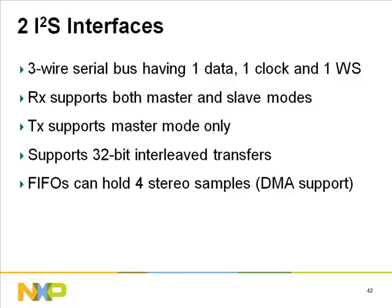The I2S bus specification defines a three-wire serial bus with one data, one clock, and one word select signal. The basic I2S connection has one master and one slave. The I2S interface on the LPC 313X provides separate transmit and receive channels. The receive supports both master and slave modes while transmit supports master mode only. In addition to 16 and 24-bit, it supports 32-bit interleaved transfers; FIFOs hold four stereo samples and DMA is supported.